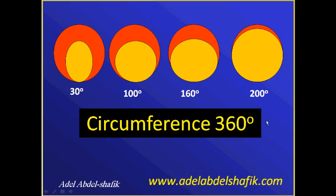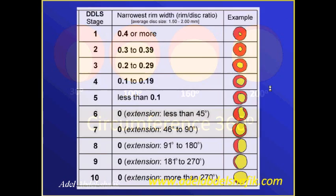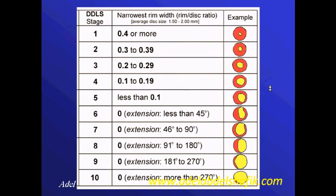This example is in 200 degrees of the circumference. Then we can place this disc in its similar or suitable position in the classification. So again: the zero area — how many degrees of the circumference does it occupy?